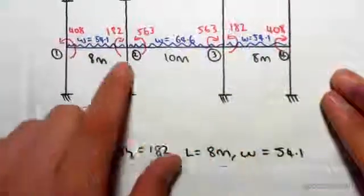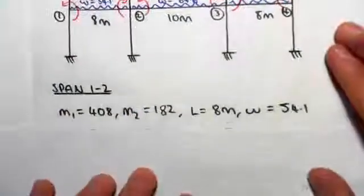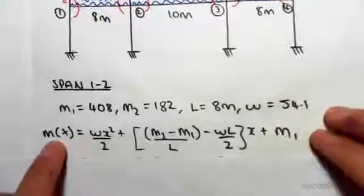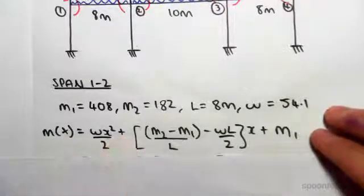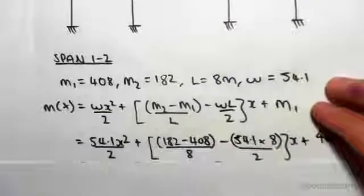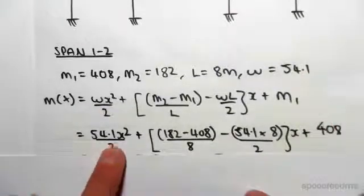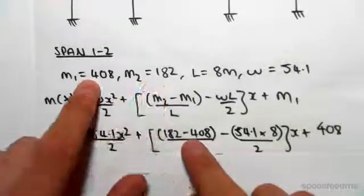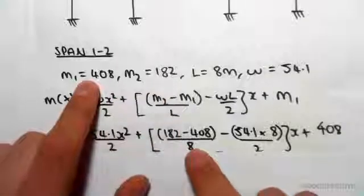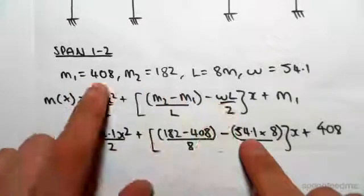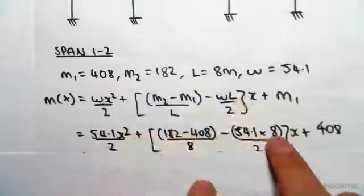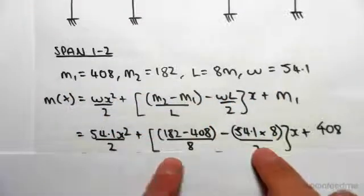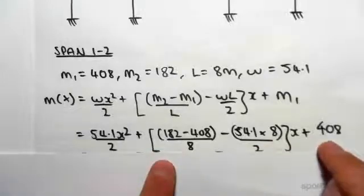Our general bending moment equation looks like this. We're going to substitute in for those values: 54.1 over 2x squared plus M2 minus M1, which is 182 minus 408, over the length 8, minus WL, so 54.1 by 8 divided by 2, all that is outside of x, plus M1 where M1 is 408, so plus 408.